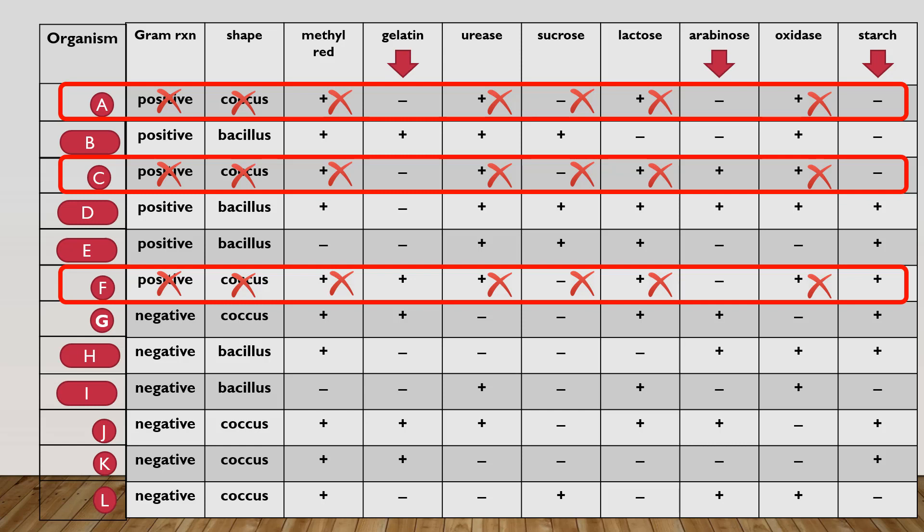Another question, is the arabinose test positive? Or again, is it negative? Last one is, is the starch test result positive or negative? In either case, I'm going to separate one of the three microorganisms, one of the three bacteria from the other two.